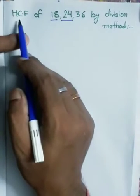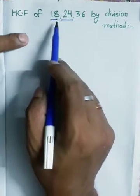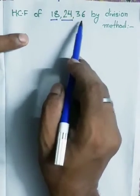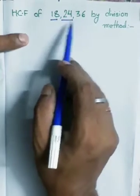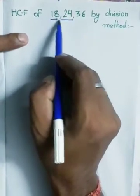HCF is highest common factor. First of all, arrange the numbers in ascending order. It is already in ascending order, so take the first two numbers, 18 and 24.